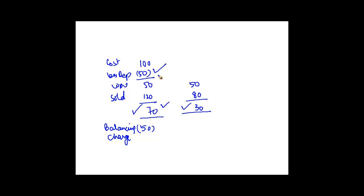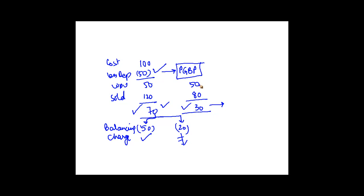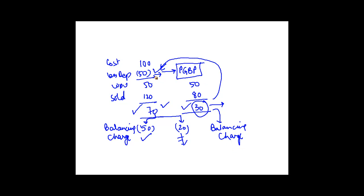The reason is that this 50 had been claimed in earlier years against profits and gains of business and profession. So if my gain is 70, I break it into two parts: 50 and 20. The 50 is taxable as balancing charge. In the other case where the profit is 30 — which is less than the depreciation of 50 — this 30 is entirely chargeable as balancing charge. The idea is: whatever you have claimed as a deduction to date, to that extent any gains are charged as PGBP income as balancing charge.